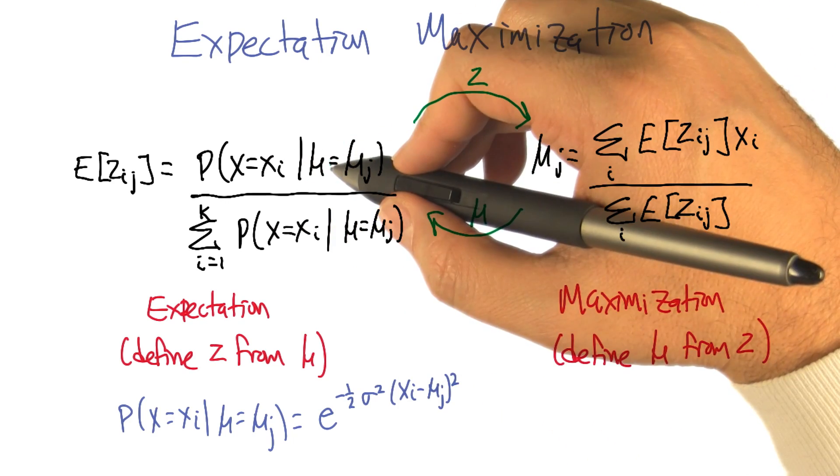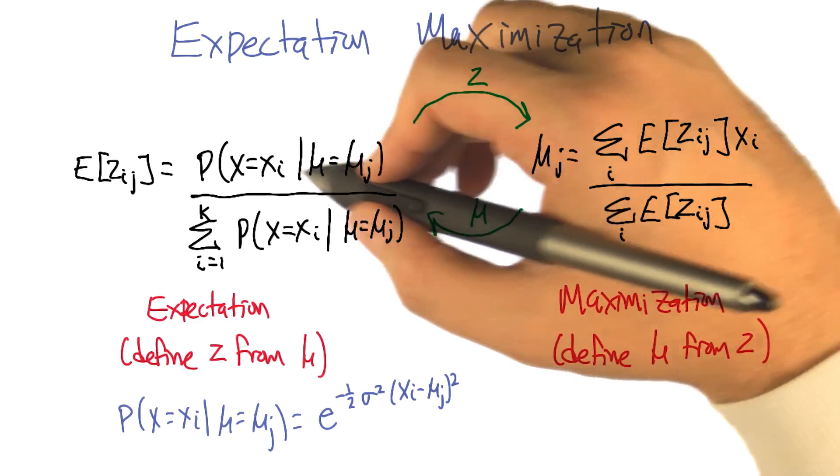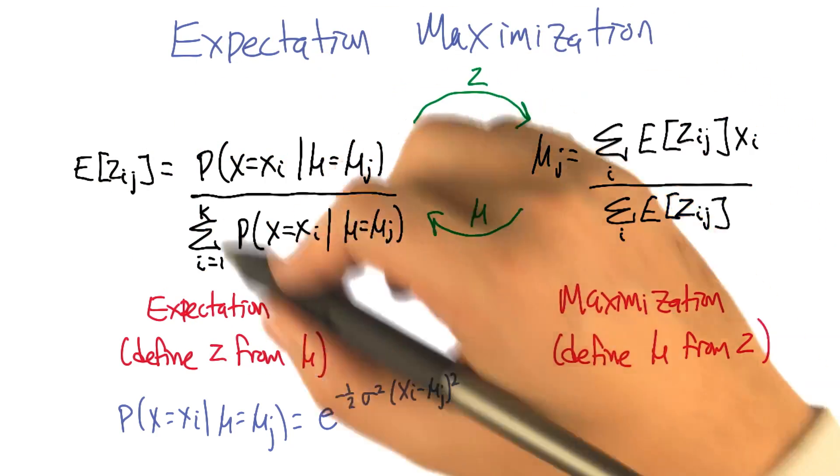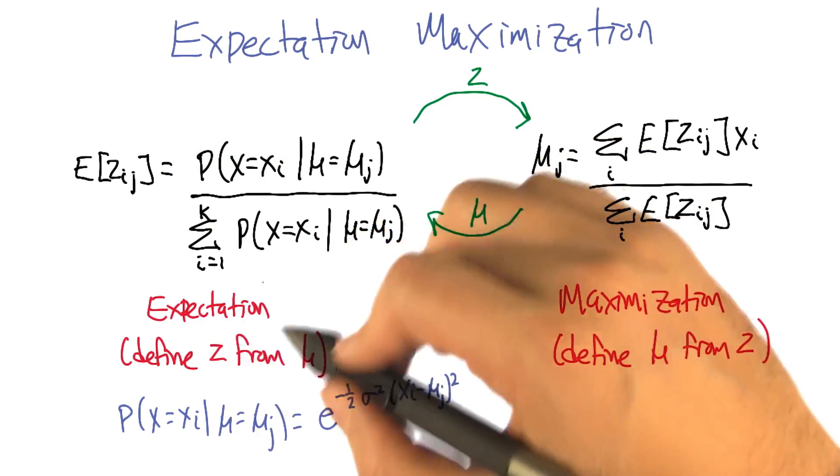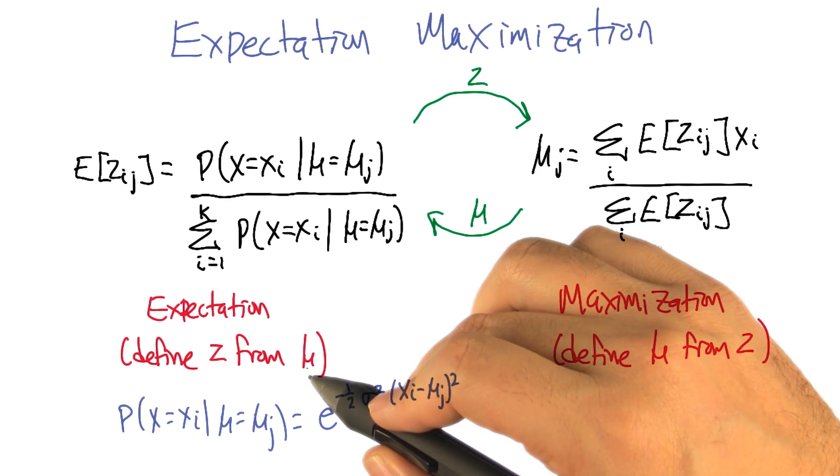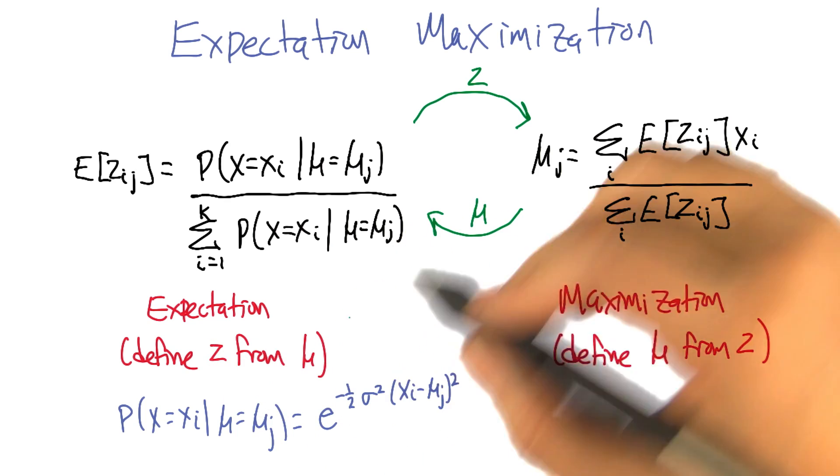So that's what the Z-step is. If we had the clusters, if we knew where the means were, then we could compute how likely it is that the data would come from the means. That's computing the expectation, defining the Z variables from the mu, the centers.